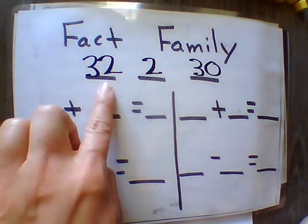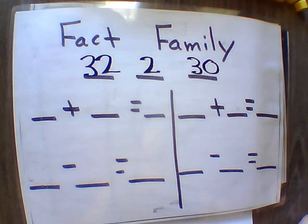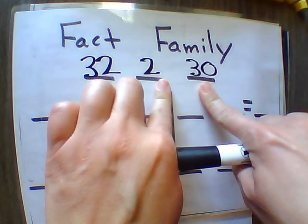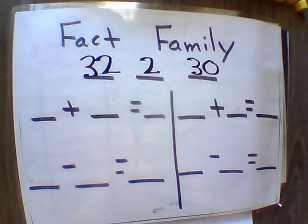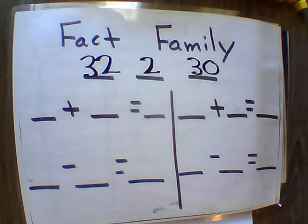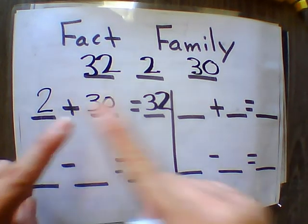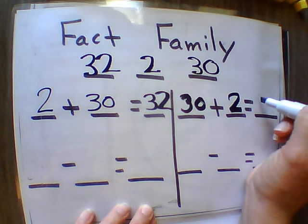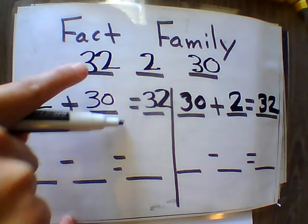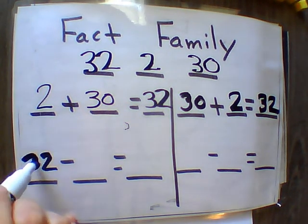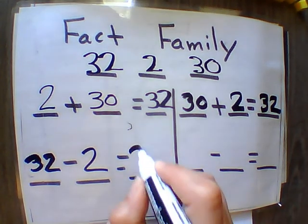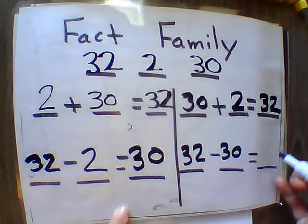Now we have our fact family with 32, 2, and 30. The larger number is our whole number, and the two smaller numbers are our parts that go together to make the larger number. Create the four equations: 2 plus 30 equals 32, 30 plus 2 equals 32, 32 minus 2 equals 30, and 32 minus 30 equals 2.